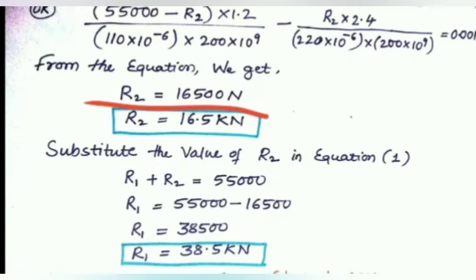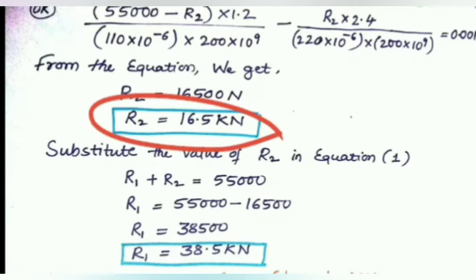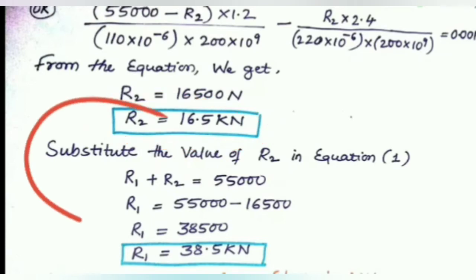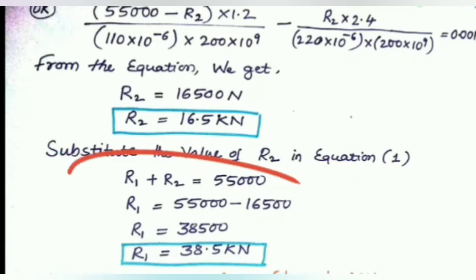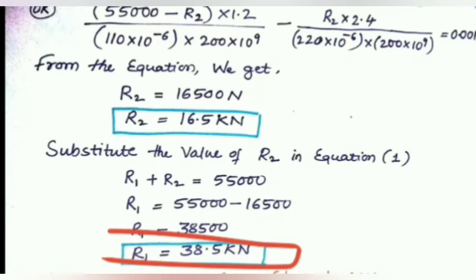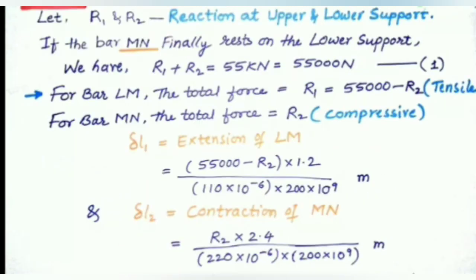From the solution, R2 equals 16,500 N, which is 16.5 kilonewton. Once R2 is known, substitute into equation one: R1 plus R2 equals 55 kilonewton, giving R1 equals 38.5 kilonewton. With R1 and R2 found, the first task of calculating the reaction forces is complete.